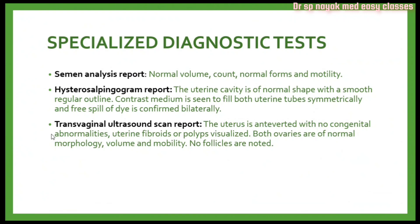A hysterosalpingogram was performed. The uterine cavity is of normal shape with a smooth regular outline. Contrast medium is seen to fill both uterine tubes symmetrically and free spill of dye is confirmed bilaterally. This test checks for morphological abnormalities in the female, and the report was normal with no obstruction noticed in the fallopian tubes.